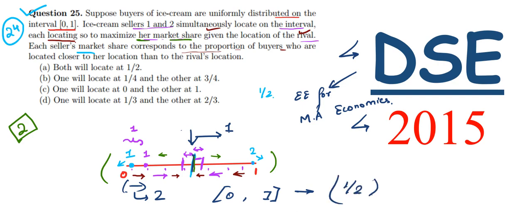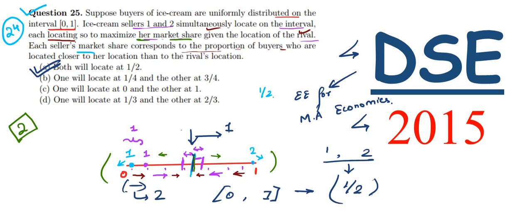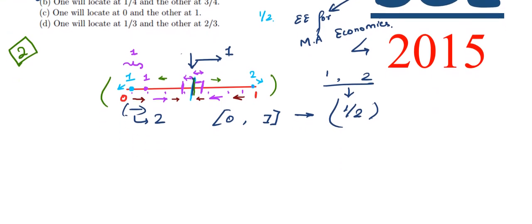So the center is at 1/2. Both sellers will locate at 1/2. Let's check the options - option A matches with our answer, hence option A is the correct answer. I will end this video here. You will find solutions to further questions in our next videos.